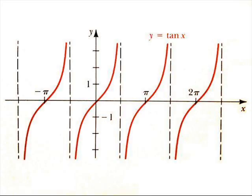This is the graph of the tangent function. This trigonometric function is defined by tangent of x equals sine of x over cosine of x, provided cosine of x is different than 0. The tangent function is an odd function, as you can see — the graph is symmetric with respect to the origin. The tangent function is defined in terms of a ratio that creates asymptotic behavior at the zeros of the denominator.